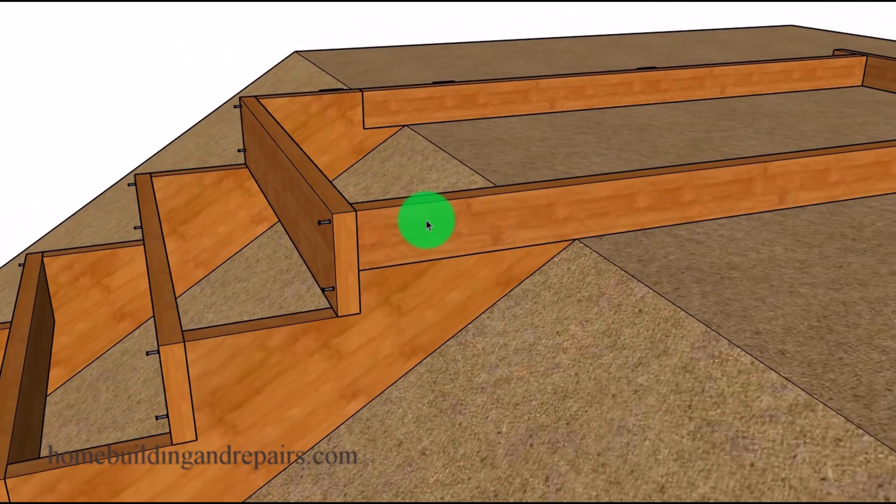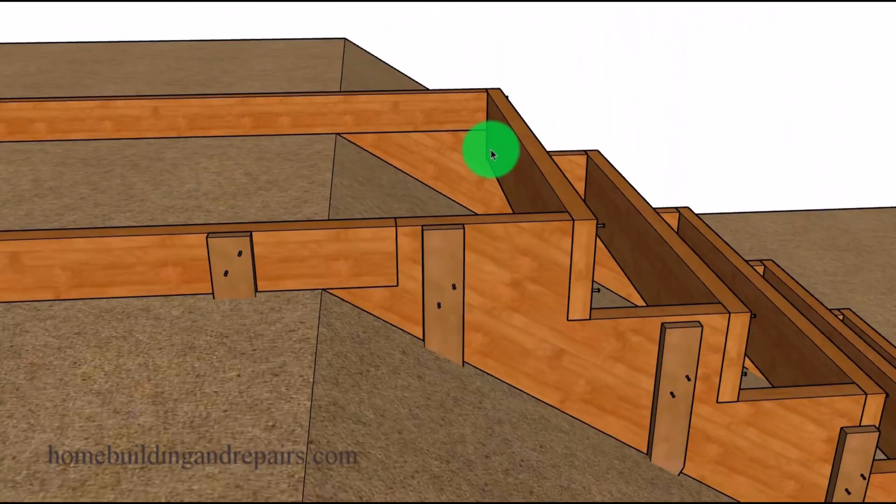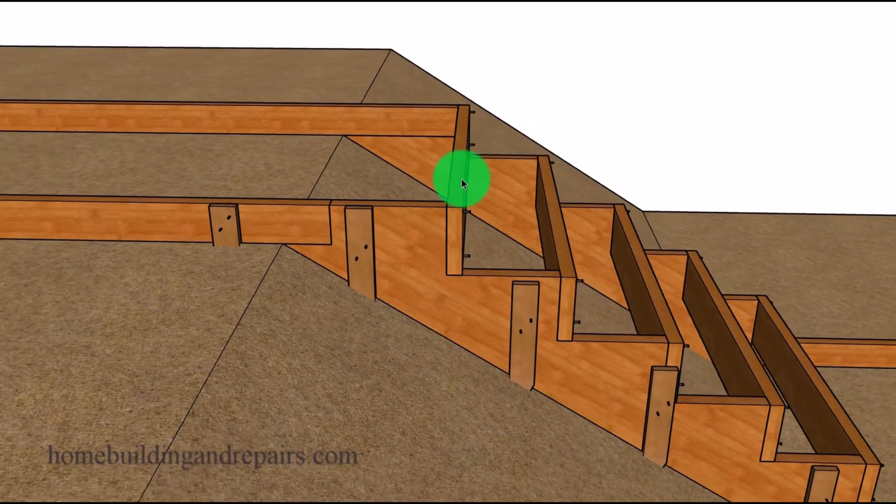Another idea at the top will be to have the stringers underneath the form board. And then, of course, you could always notch around it. So just wanted to throw out a couple of more options, if these will work better for you.